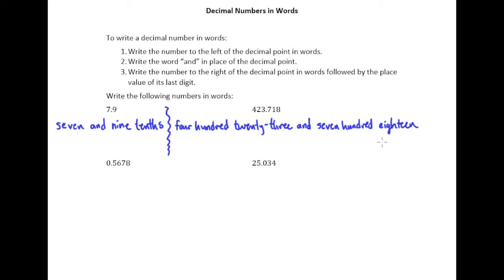Okay 718 but then we follow it by the place value of the last digit. Looks like I just ran out of room here so forgive me. I'm just going to go right down here. So 718 and we are in the thousandths place with that very last digit. Right? Because this is tenths. This is hundredths. The eight is in the thousandths place and so that's how we finish up this number written in words.